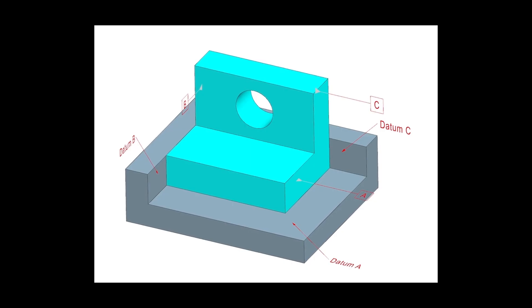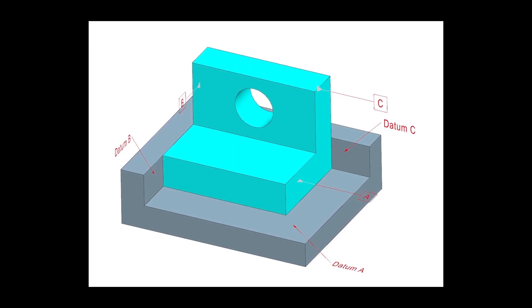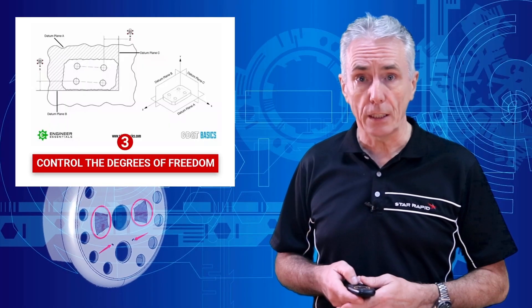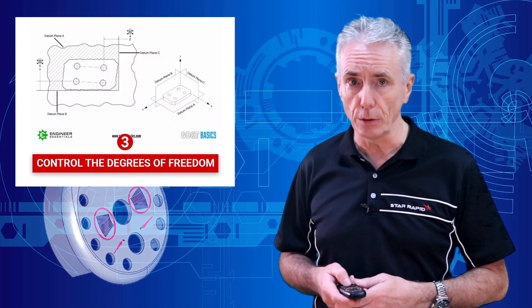If there is some confusion, refer to what we said earlier about which datum takes precedence in a feature control frame. When all six degrees are locked, then it's clear where every feature should be in three-dimensional space.